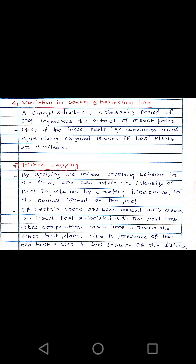By adjusting sowing and harvesting time, we can eradicate insect pests. These pests lay a maximum number of eggs during confined seasons, so if the host plant is available in that season, insect growth increases. If we change the sowing and harvesting time, the life cycle of these insect pests is disrupted because the host plant is no longer available in the confined area. Through changing sowing and harvesting time, we can disrupt the insect life cycle and protect our crops.